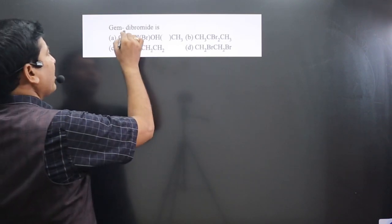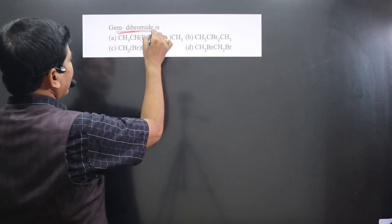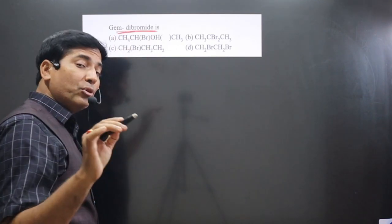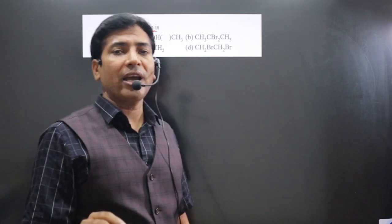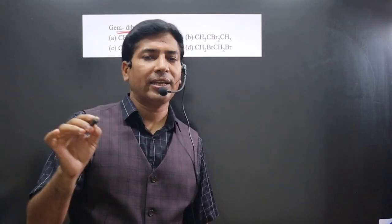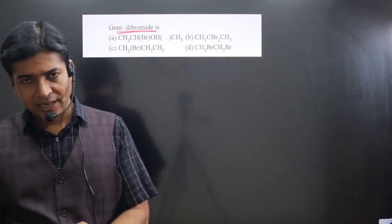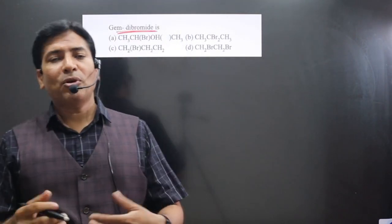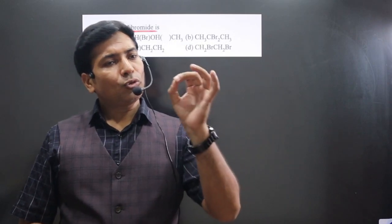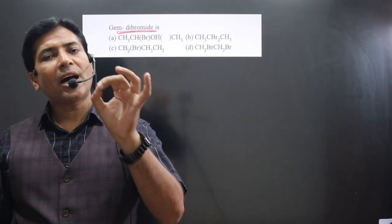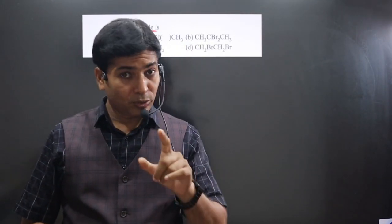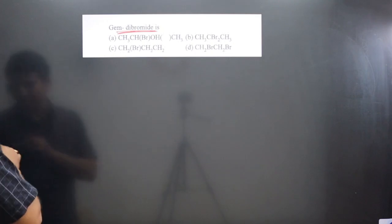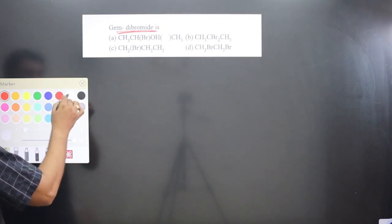The question says gem dibromide is — always keep in mind, gem dibromide is an example of gem dihalide. About gem dihalide, we have learned that 2 halogens are directly connected to the same carbon.